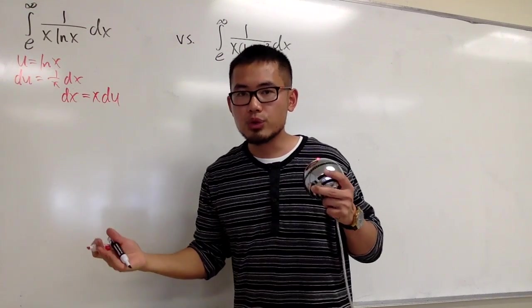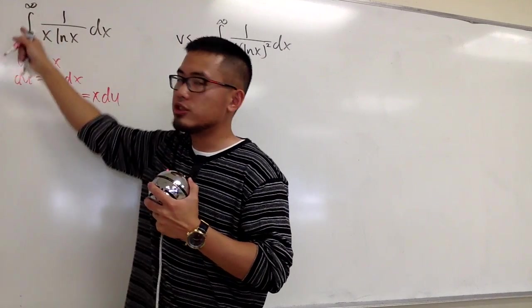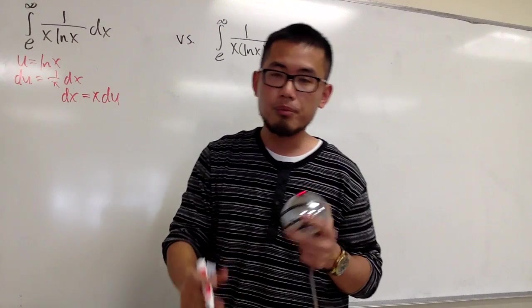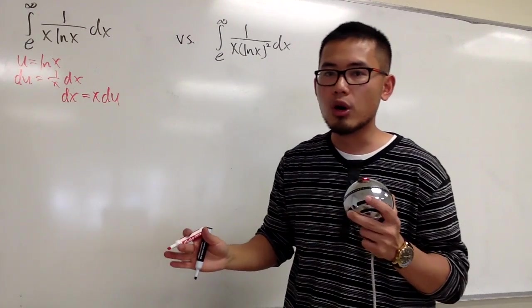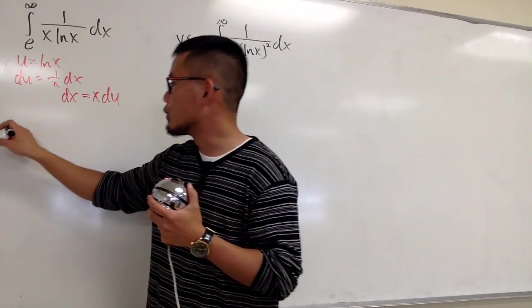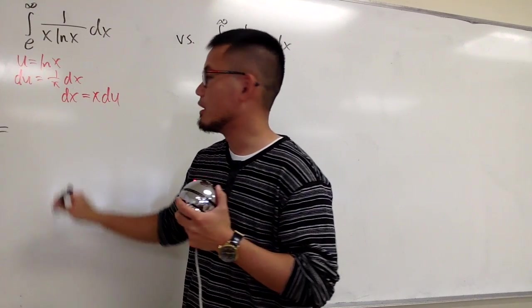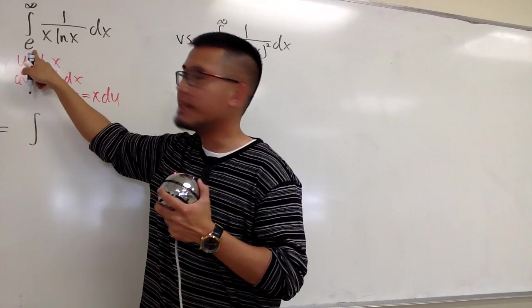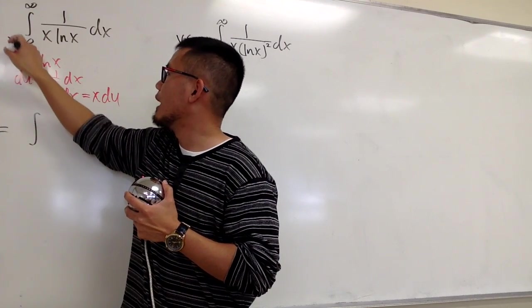And depending on how you want to do it, if you want to change the limits from e to infinity in terms of x to in terms of u, and then just finish everything in the u world, that will be great. This is going to be the integral. Originally, I have e, but this is for x.